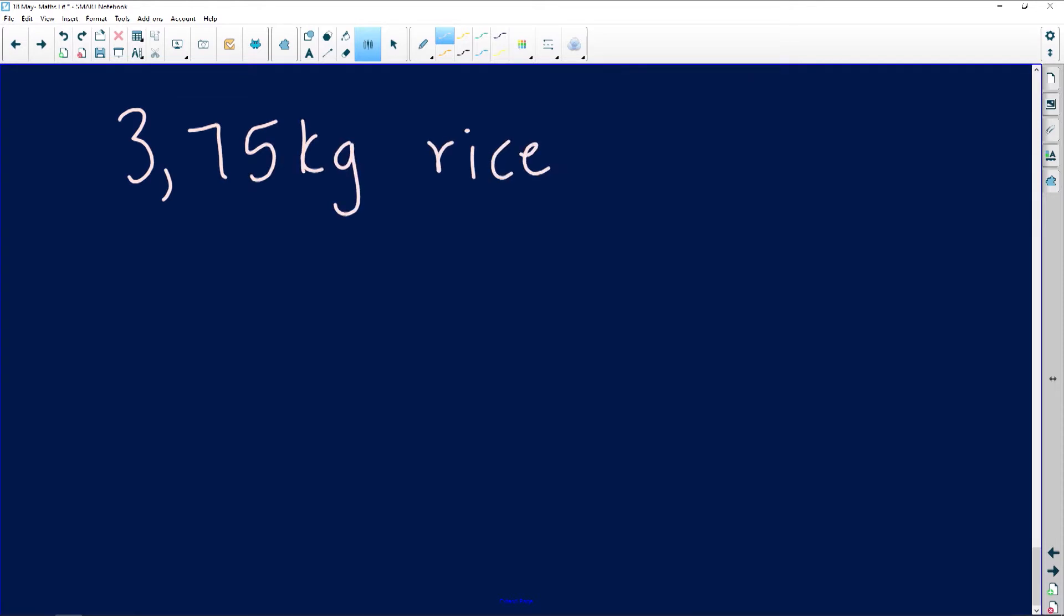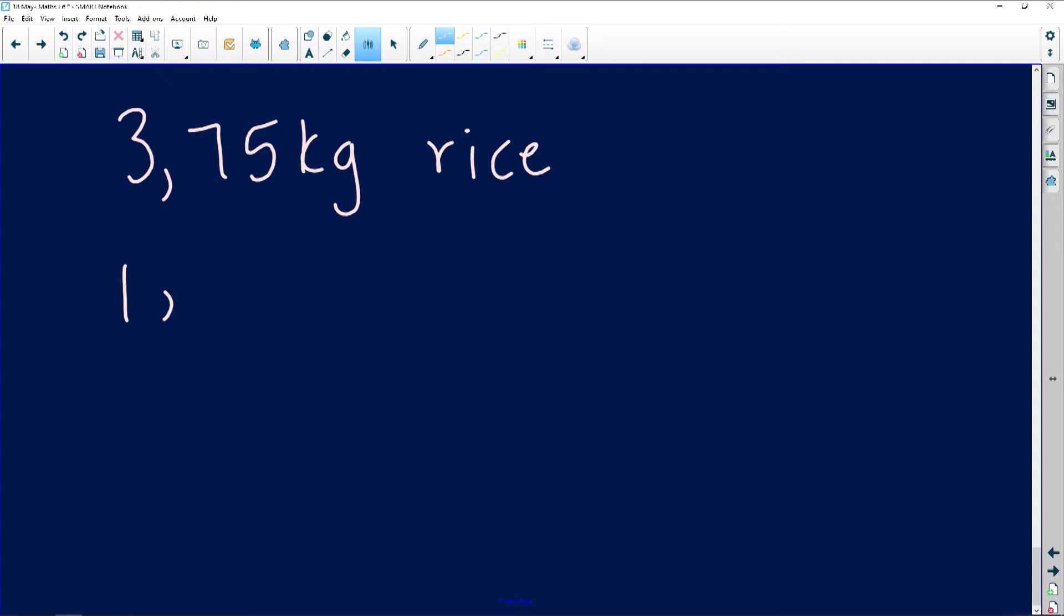So I'll write that down: 3.75 kgs of rice and 1.5 kgs of beef. The beautiful thing about this question is that we've already been given the same unit of measurement throughout, so we don't need to do any conversions. The first question says that rice is sold in packets of 2 kgs.